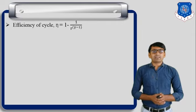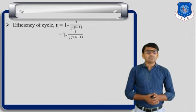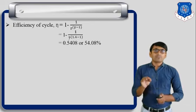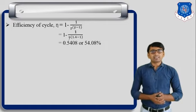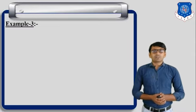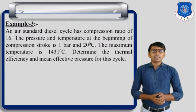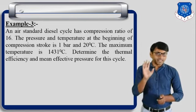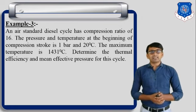Efficiency of the cycle: eta equals 1 minus 1 divided by R raised to gamma minus 1. Putting in the values of R and gamma, we get 0.5408, or 54.08 percent. This completes example two of the Otto cycle. Now, example number three is an example of the diesel cycle.